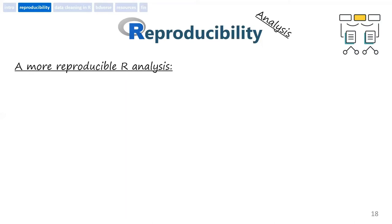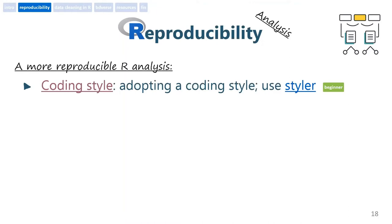How can we make our analysis more reproducible? First, we need to invest in a coding style. Learning one will be a good investment — it will provide consistency and clarity when reading and writing our code. It will help make the code much easier since you have fewer decisions to make. And if you get confused with indentation and parenthesis placing, use styler. It will help you tremendously.